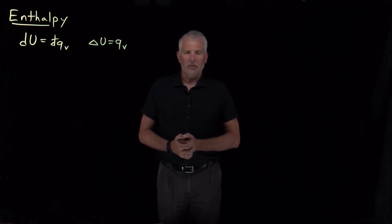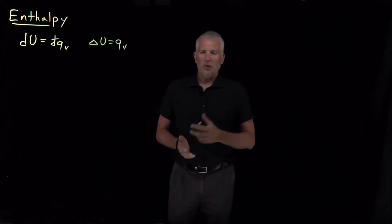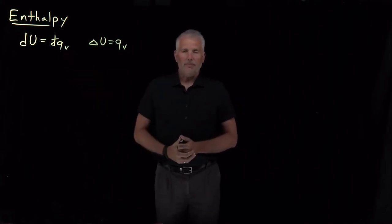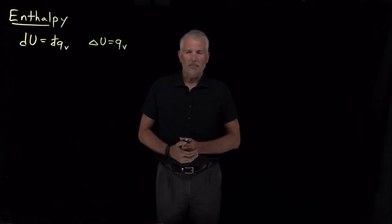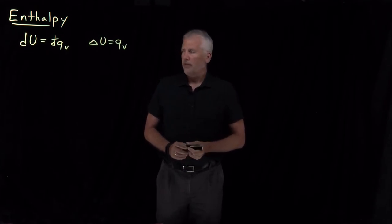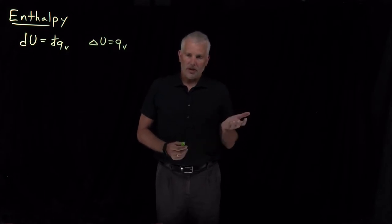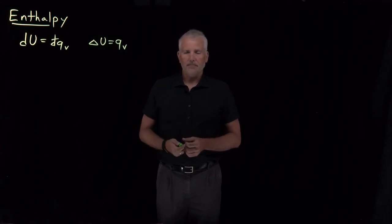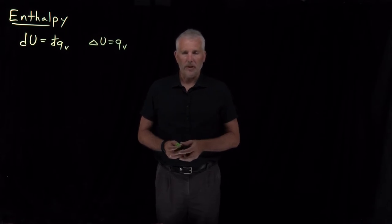So it's quite convenient to do things at constant pressure rather than constant volume. But then we lose the advantage of not having to worry about the PV work in a process. So the next step is to define a quantity that has all the advantages of the internal energy — not having to think too hard about PV work — but also the experimental advantages of being more convenient at constant pressure rather than constant volume.